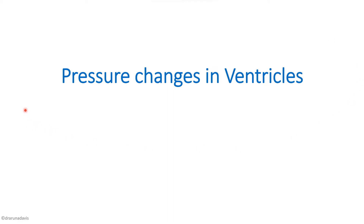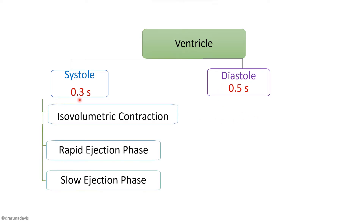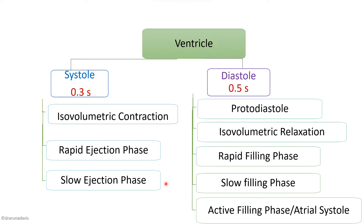First we will see how to draw and show the pressure changes in the ventricles, but before moving on to the diagram we should first know the phases of ventricular contraction. The ventricles have a systole and diastole. Systole is approximately 0.3 seconds and is divided into three phases: isovolumetric contraction, rapid ejection phase, and slow ejection phase. Diastole is around 0.5 seconds and is divided into five phases: protodiastole, isovolumetric relaxation, rapid filling phase, slow filling phase (diastasis), and active filling phase which coincides with atrial systole. Systole has 0.3 seconds and 3 phases; diastole has 0.5 seconds and 5 phases.